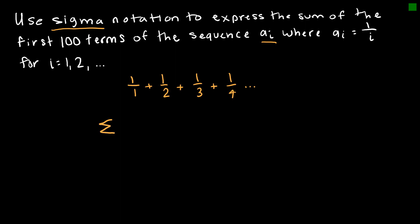So we have our sigma, and we say that I is going to go from 1, because 1 is the starting point, and we're doing the first 100 terms. So the upper bound would be 100, because we know if I continued this, then I would get to 1 over 99, 1 over 100, etc. And so the way that I would write this, is then I would write 1 over I.